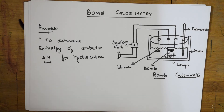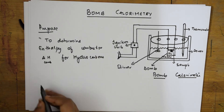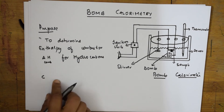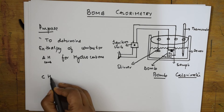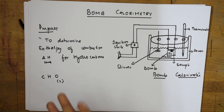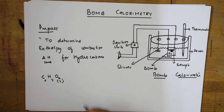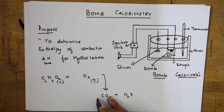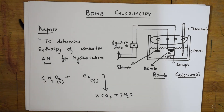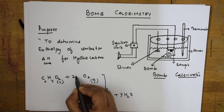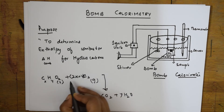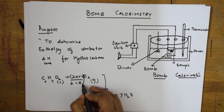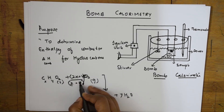When I write the combustion reaction, combustion means heating in the presence of oxygen. Let us take a hydrocarbon — something which has carbon, hydrogen, and oxygen. Assume the physical state is solid. I write x moles of carbon, y moles of hydrogen, and z moles of oxygen. I combust it — heat in the presence of gaseous oxygen — and the products formed are CO₂ and H₂O. Carbon gives x moles of CO₂, hydrogen gives y/2 moles of H₂O. For balancing oxygen: (2x + y/2 − z) moles of O₂.